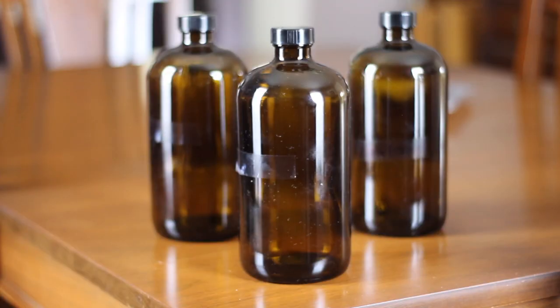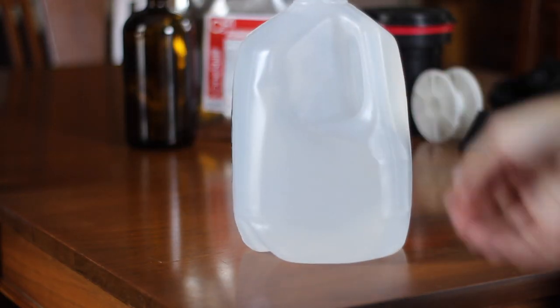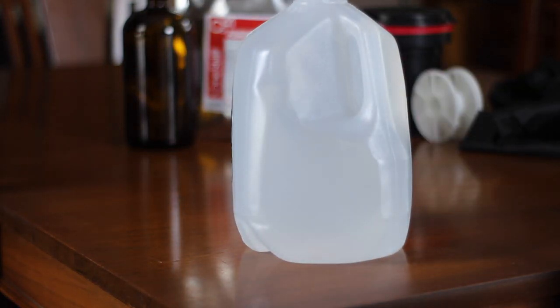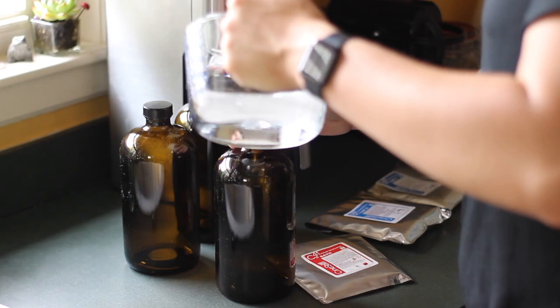I also use an Epson V600 for scanning. Some other things that are useful in the development process are a thermometer, a funnel, brown bottles to store your chemicals in, and you're probably going to want some distilled water for when you're mixing those chemicals together.